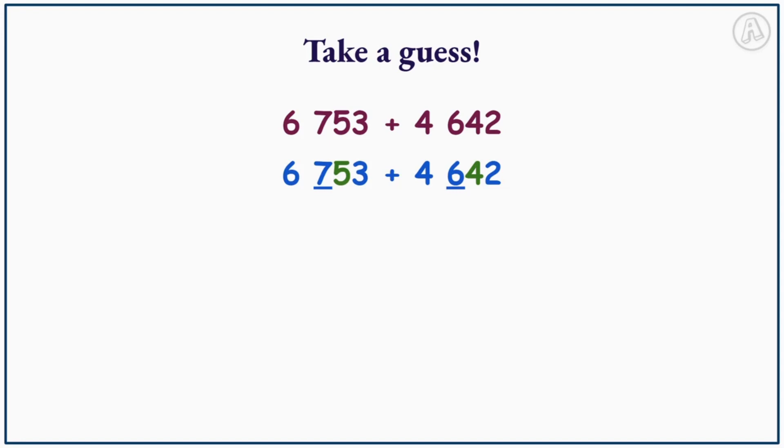Let's round off to the nearest hundred. So 6,753 becomes 6,800 and 4,642 becomes 4,600 which equals 11,400. Note to get to 6,800 we add 47 to 6,753, and to get to 4,600 we subtract 42 from 4,642.